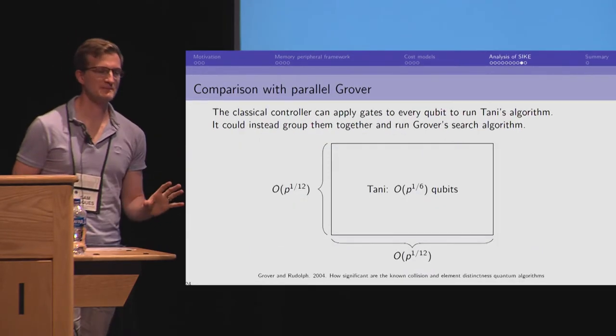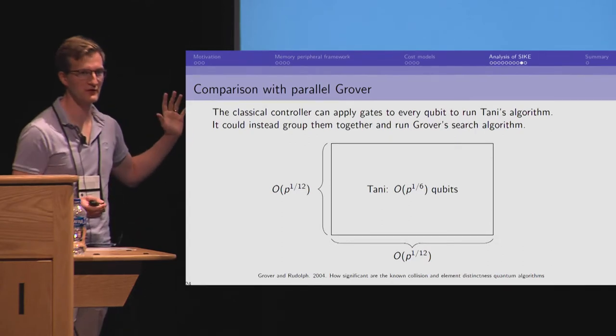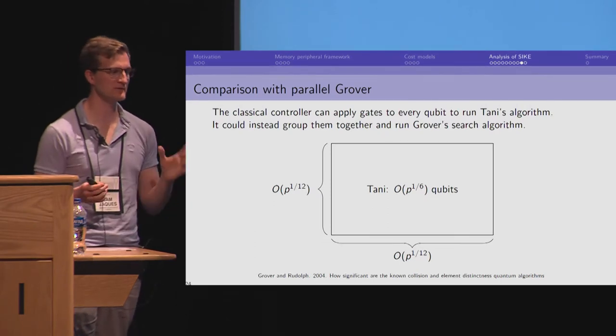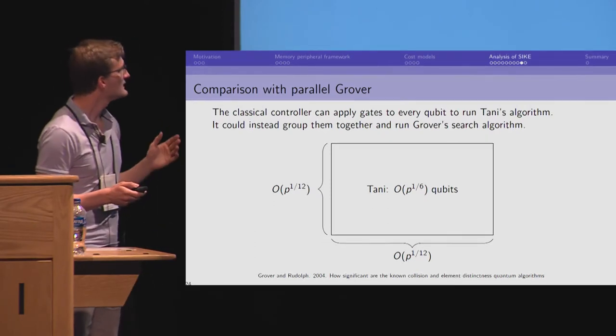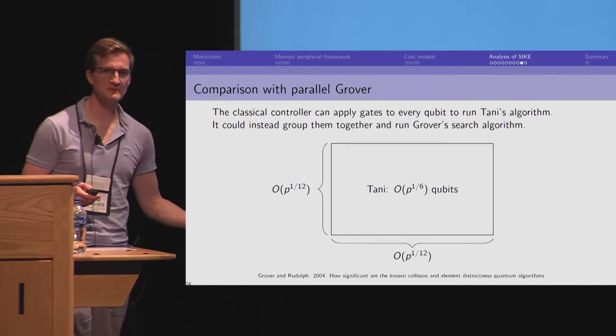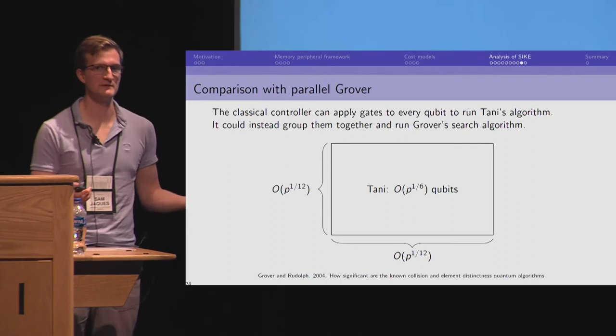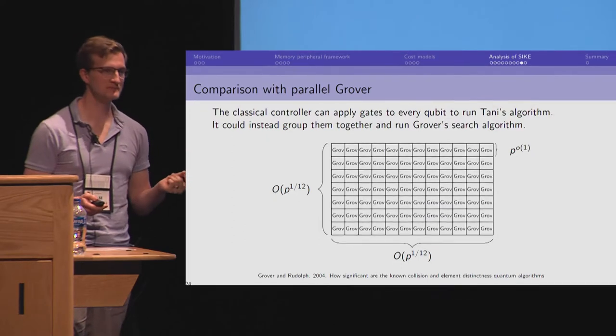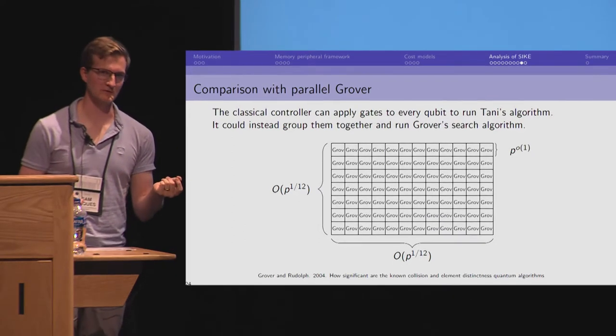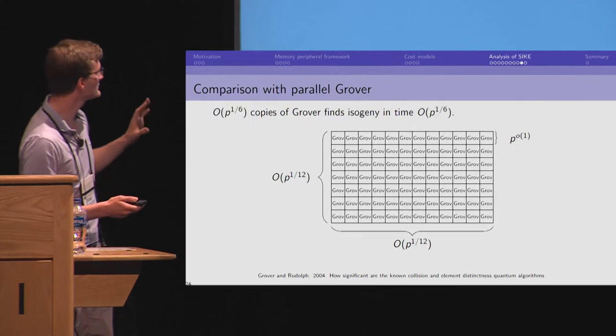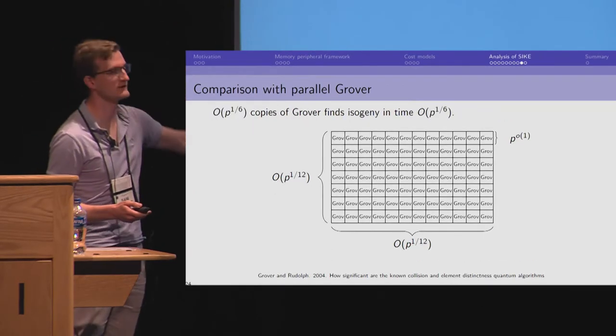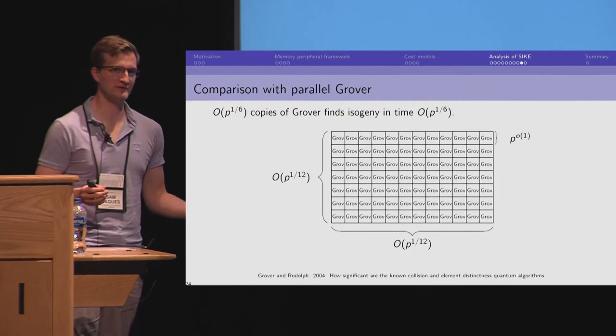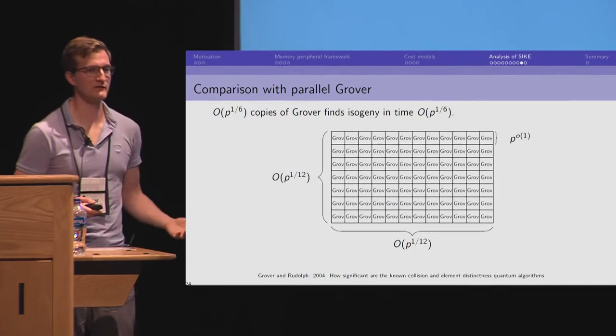To give a little more intuition on why this makes sense, we use an argument of Grover and Rudolph. And they say that if you've got this big quantum computer, so for Tani's query optimal algorithm, we've got P to the 1/6 qubits, we're ready to apply any gate we want to any qubit we want at every time step. So, we could do anything else with these qubits that we wanted. We could group them together into little arrays and run Grover on each of them. So, now we've got P to the 1/6 copies of Grover's algorithm. They're all running in parallel. And we do the math on this, and they find the isogeny in time P to the 1/6. So, this is the same time as Tani's algorithm. What this is saying is that the hardware to run the query optimal version of Tani's algorithm could be repurposed to run Grover and get the same algorithm time.